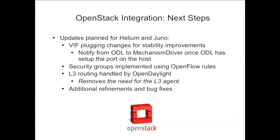Where are we going with this one? We have quite a few updates planned for Helium — remember, the current release is called Hydrogen. Updates include plumbing changes for stability improvements, which is one of the big struggles in OpenDaylight right now — stability versus features. We want to be able to notify from ODL to the mechanism driver once ODL has set up the port on the host, which we can't do right now. Security groups implemented with OpenFlow rules is a logical thing to want. L3 routing handled by OpenDaylight removes the need for the L3 agent, which we want to get rid of. And of course, fixing all the bugs.